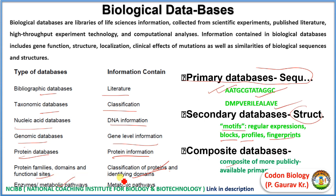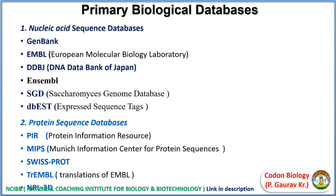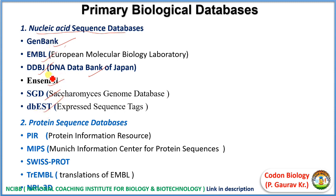Enzyme and metabolic pathway databases contain metabolic pathway information. At your exam level, questions will ask whether a given database is primary or secondary. Primary databases contain sequence data. Nucleic acid sequence databases include GenBank, EMBL, DDBJ, NCMBL, SGD, and DBAST.